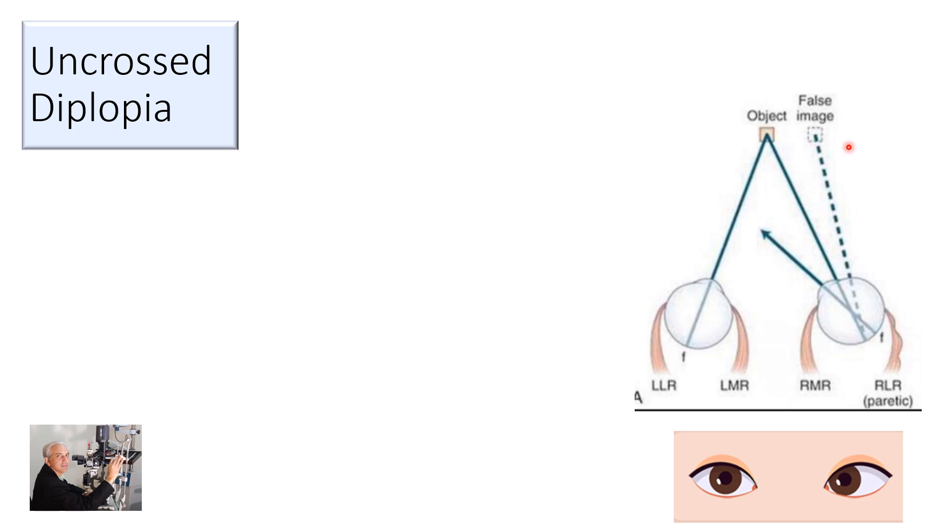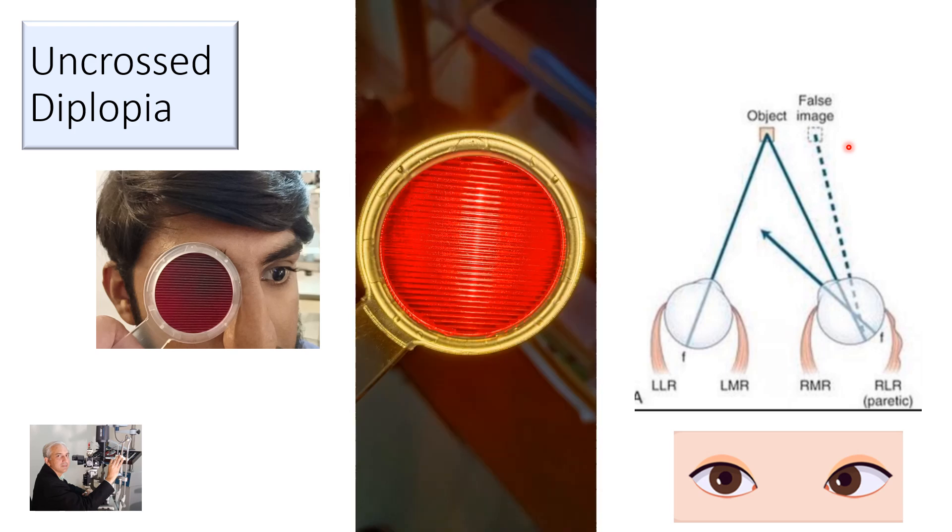If you look at this vertical line, you will see that the light which you see is going to be on the right side of the vertical line seen through that Maddox rod. So this is going to be an uncrossed diplopia which you see in these patients.